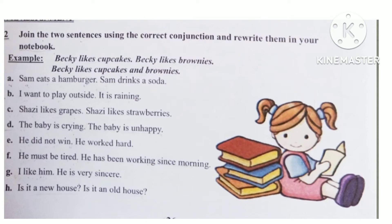In the same way, you will join the sentences using the correct conjunction. Let me do Part A for you. Part A is: Sam eats a hamburger __ Sam drinks a soda. Again, you can see the same ideas, so we join them using the conjunction AND.